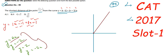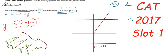The second equation, y = -2, is a horizontal line passing through the point (0, -2). The third equation, y = 2, is a horizontal line through (0, 2). The fourth equation, y = -2x, goes in the opposite direction to y = 2x.